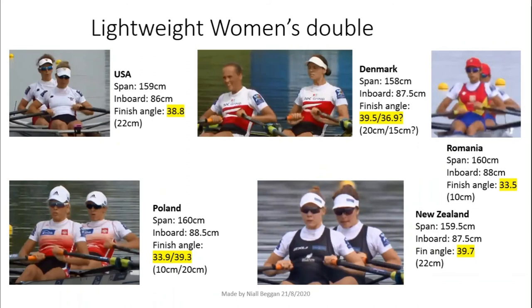In the women's lightweight doubles, you can see a generally smaller inboard to try and maintain the large arc despite shorter stroke lengths. Also, smaller span to maintain reasonable finish angles. Except for the Romanians. Under 23 world champions, who had a crazy narrow finish. And they also won the senior world champs.